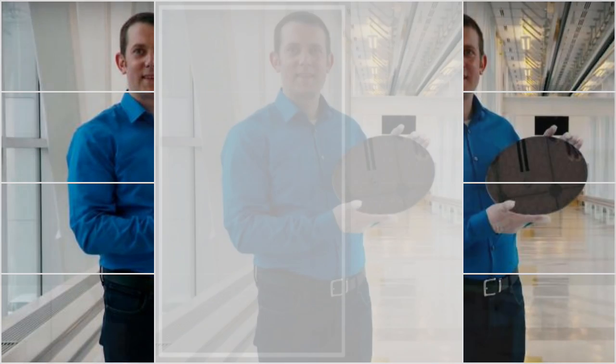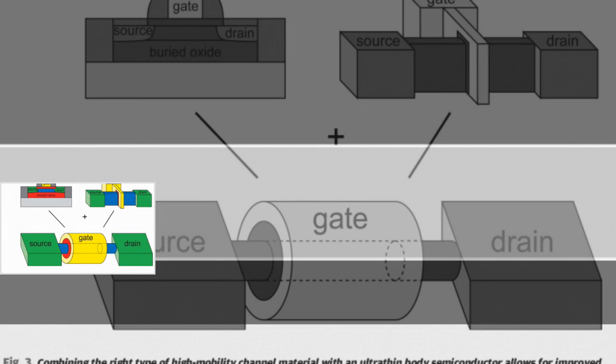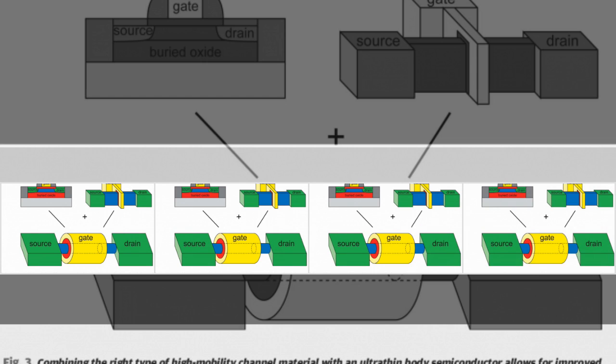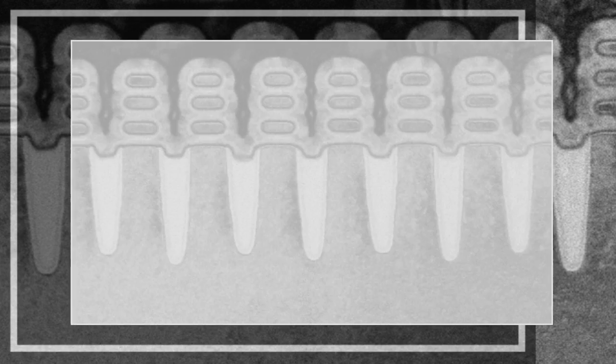The test chip was also built using EUV, an important step for the technology, given the difficulties we've seen with ramping EUV production overall. IBM claims that using EUV allows the company to adjust the width of the silicon nanosheets continuously, and that its nanosheet approach and EUV allow for flexibility that current semiconductor designs can't match.